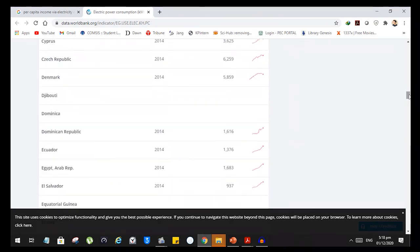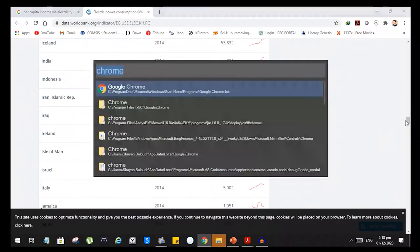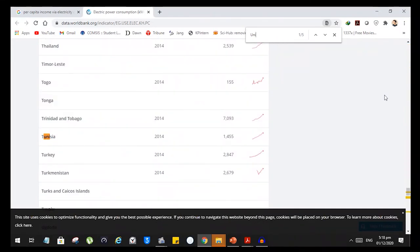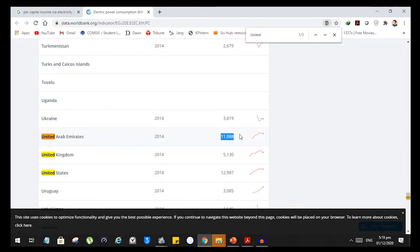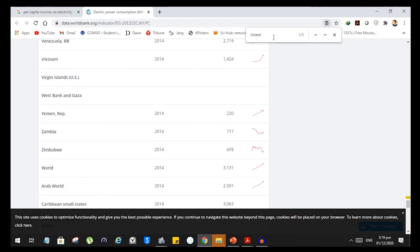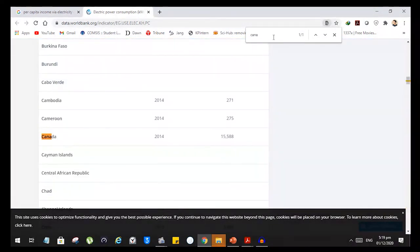Let's search for United States. I'm going to press Ctrl+F and search United. United States is doing 12,000, Arab Emirates is doing 11,000 something. They have a lot of industries going on. What about Canada? Let's search for Canada, because these are one of the developed countries. Canada is doing 15,000 kilowatt per hour per capita.